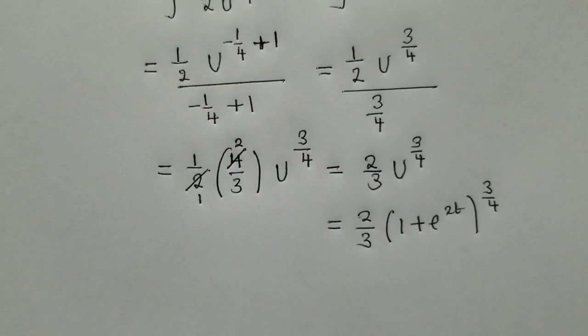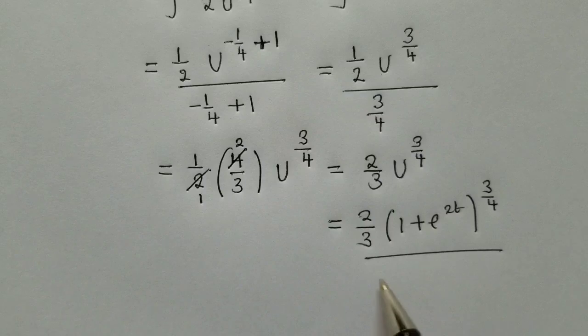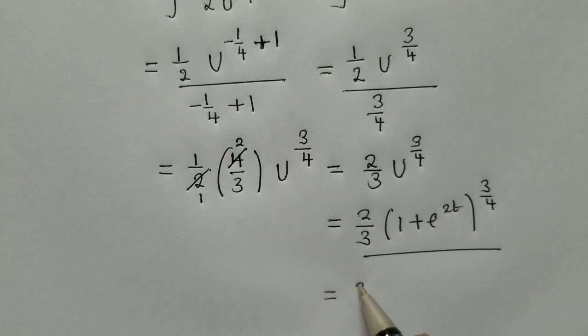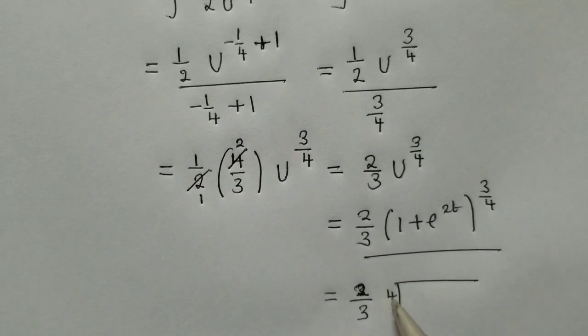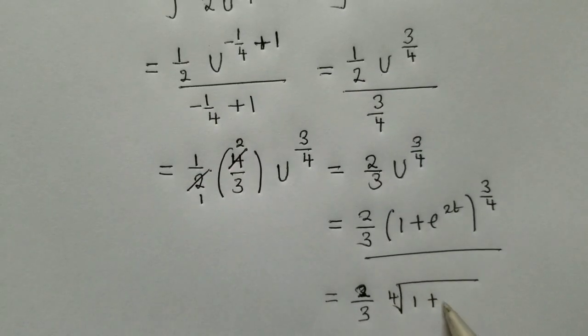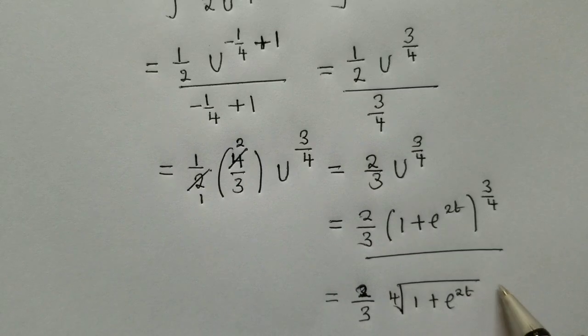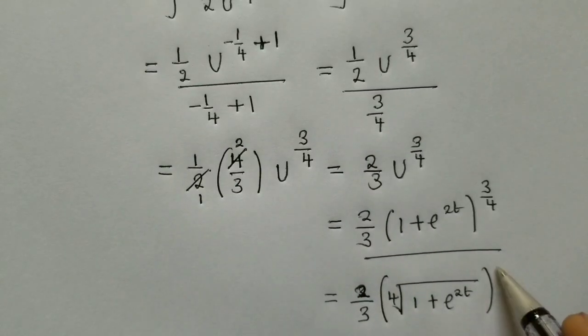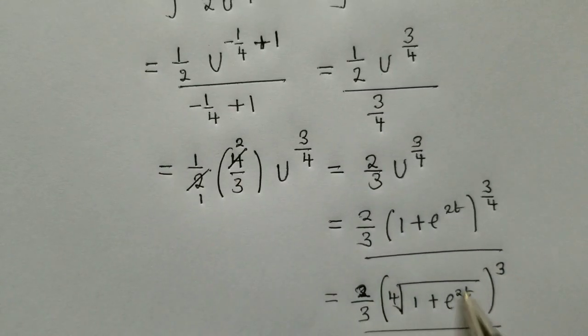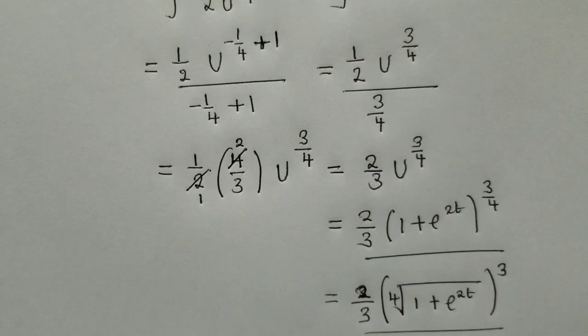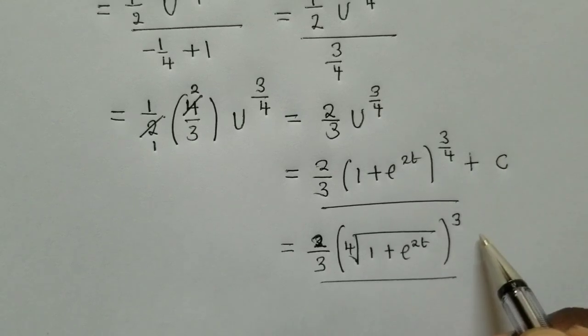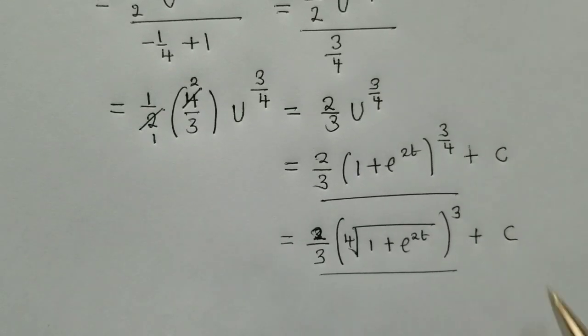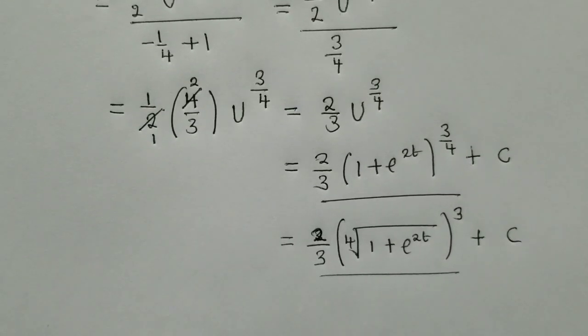So this is our answer. If you want, you can end here. If you want, you can write your answer as 4th root of 1 plus e power 2 and power 3 here. So you can leave your answer like this or like this. Remember to put plus c, the constant. It must show. Thank you.